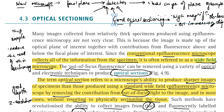Beyond increasing the numerical aperture, there are other techniques available to improve optical sectioning in bright field light microscopy. Most microscopes with oil immersion objectives are reaching the limits of numerical aperture due to the refraction limit, so other methods are needed.